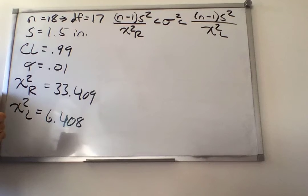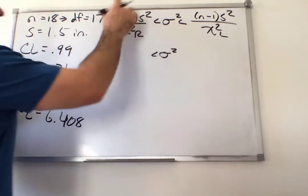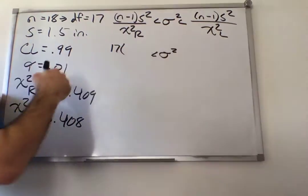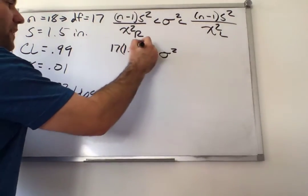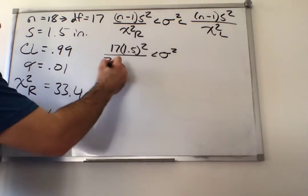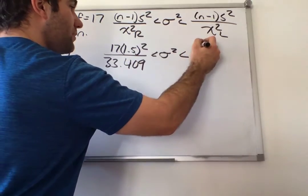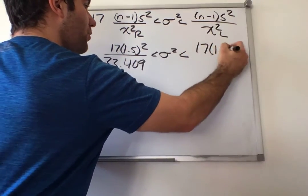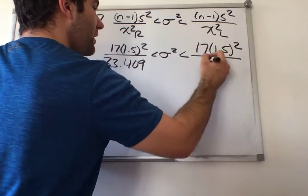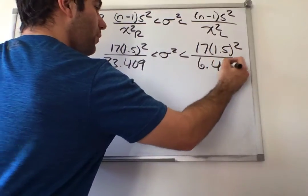n minus 1, well that's 17. Standard deviation is 1.5 squared divided by the chi-squared right value, 33.409, less than 17 times 1.5 squared divided by the chi-squared left value, 6.408.